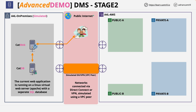We now have the secure connection between the simulated on-premises environment and the AWS environment, with gateway objects configured in both VPCs and routes configured at both sides so they can communicate. At this point, you've done everything required in Stage 2 of this demo series. Go ahead and complete the video, and I look forward to joining you in Stage 3.